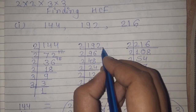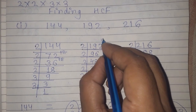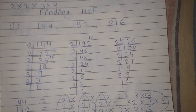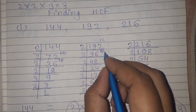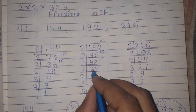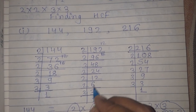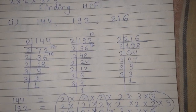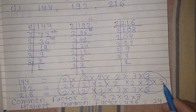For 192: it is an even number, divisible by 2. Dividing repeatedly by 2: 192 ÷ 2 = 96, 96 ÷ 2 = 48, 48 ÷ 2 = 24, 24 ÷ 2 = 12, 12 ÷ 2 = 6, 6 ÷ 2 = 3, and 3 ÷ 3 = 1. So the prime factorization of 192 is 2 × 2 × 2 × 2 × 2 × 2 × 3.